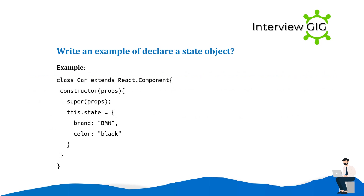Write an example of declaring a state object. Example: class Car extends React.Component { constructor(props) { super(props); this.state = { brand: 'BMW', color: 'Black' }; } }